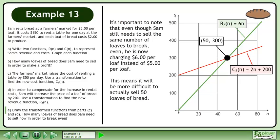It's important to note that even though Sam still needs to sell the same number of loaves to break even, he is now charging $6 per loaf instead of $5 per loaf. This means it will be more difficult to actually sell 50 loaves of bread.